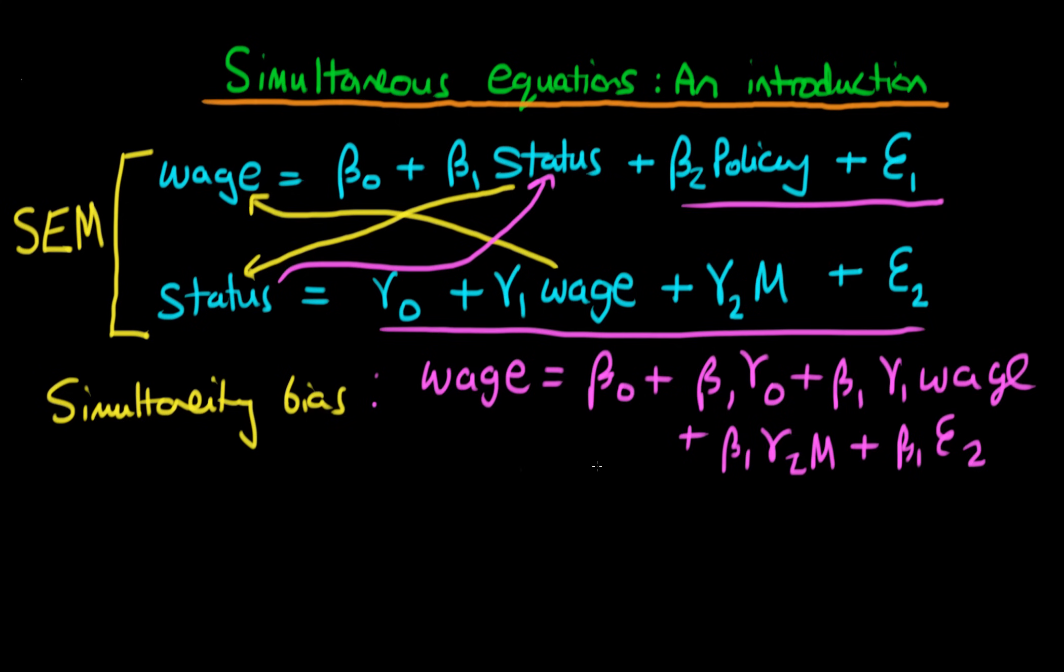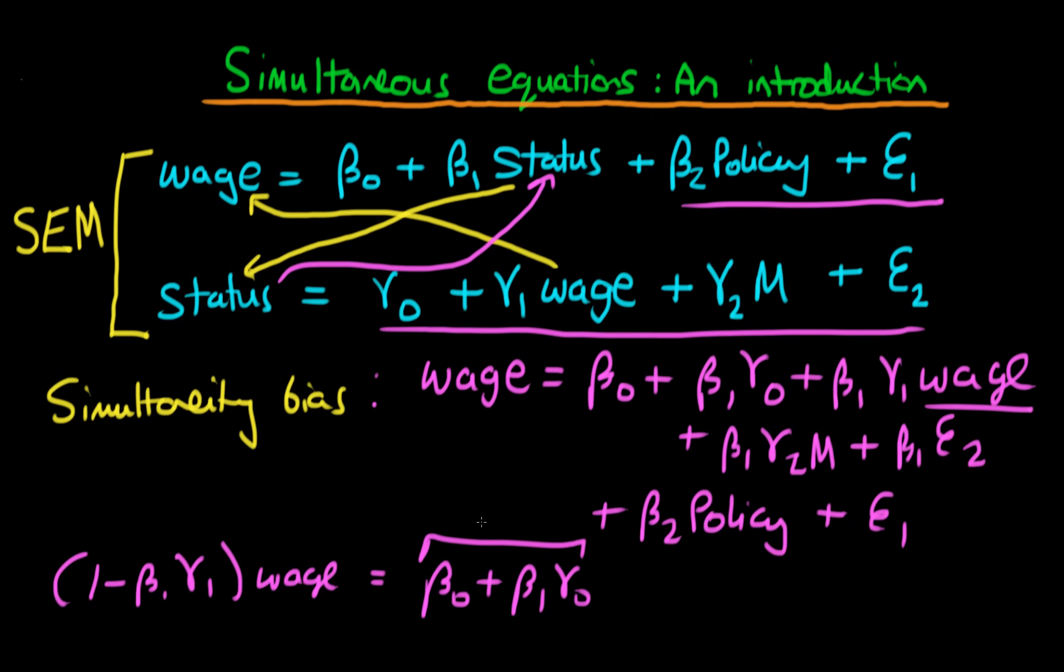And then finally, we've got these two terms up here because they still appear. So we're going to have plus beta 2 times this policy variable plus epsilon 1. So we've done a little bit of rearranging of stuff. And if we do a little bit further and we take this wage expression here over to the left-hand side, we get that 1 minus beta 1 times gamma 1 times an individual's wage is equal to beta nought plus beta 1 times gamma nought. So all of these things are what we would think about as constants in our relationship. And then we get plus beta 1 times gamma 2 times whether an individual is married. And then we get, importantly, plus beta 1 times epsilon 2 plus beta 2 times our policy term, which I'm going to put in over here. And then finally, we get our epsilon 1 term here.